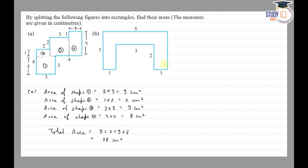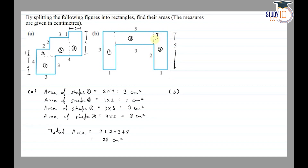Similarly, we have split figure B as well. We will split this figure. We split from here, and here, and here — taking 3 regions: 1, 2, 3. The length is 3 and the breadth is 1. The opposite side is also 3, and breadth is 1. This part is 3, and the complete side is 3 with breadth 2, giving a length of 3.